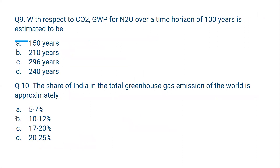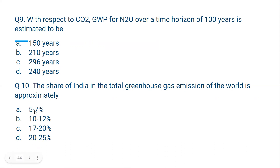Question number nine: With respect to carbon dioxide, the global warming potential for N2O over a time horizon of 100 years is estimated to be approximately 298. Question ten: The share of India in the total greenhouse gas emissions of the world is approximately 5 to 7 percent. The correct option is A.